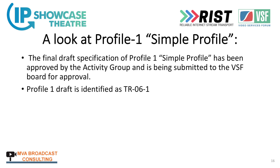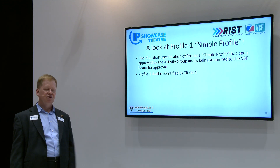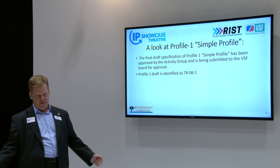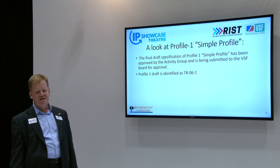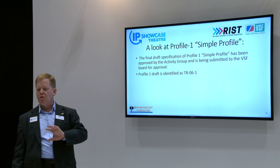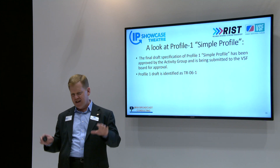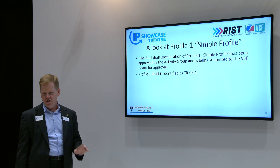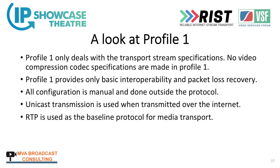The final draft specification for profile one, the simple profile, has been approved by the activity group and is being submitted to the VSF board for approval. The profile draft is referred to as TR06-1, and profile two will be TR06-2, and so on. We're releasing this incrementally so people can start building products. Profile one only deals with transport stream specifications — no video compression codec is specified. It provides only basic interoperability and packet loss recovery, and all configuration in profile one is manual.